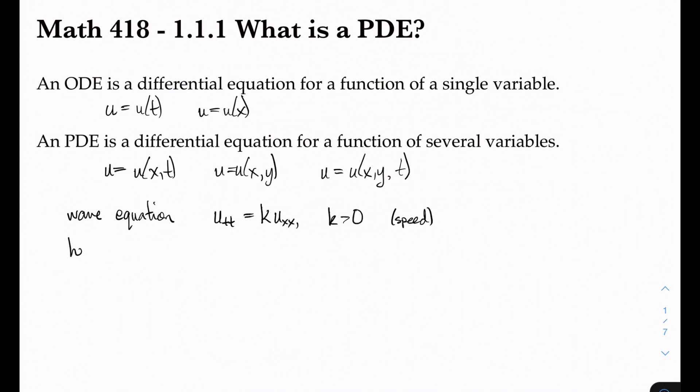There's also the heat equation. The heat equation is when the first time derivative is proportional to the second space derivative. Again, here k is going to be some positive constant. It has a different name. In this case it's called diffusivity, and it's a function of the object's material that the heat is propagating in.